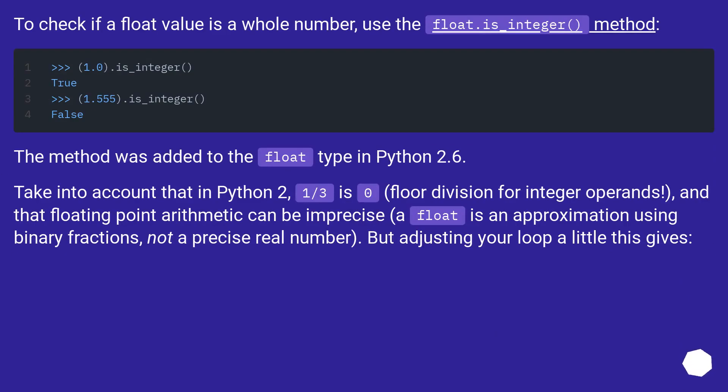To check if a float value is a whole number, use the float.is_integer method. The method was added to the float type in Python 2.6.